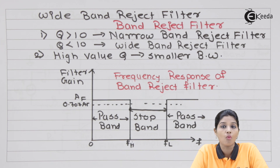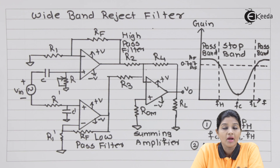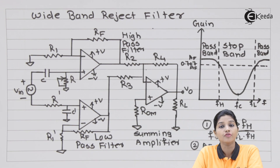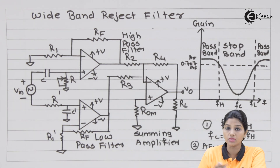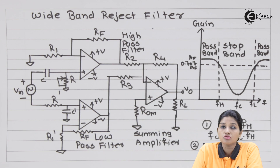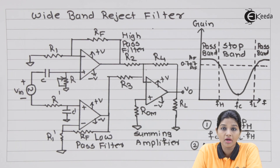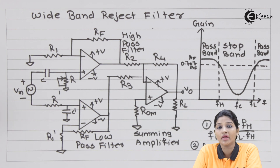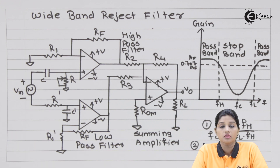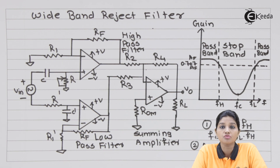The circuit of a wide band reject filter consists of a high pass filter, a low pass filter, and a summing amplifier. The frequency response of the wide band reject filter consists of two frequencies FH and FL, along with the center frequency FC. This is the practical response of the wide band reject filter. In case of a wide band reject filter, the stop band is wider compared to the narrow band reject filter. The value of FL should be greater than FH. The frequency response is basically a combination of the frequency responses of the low pass filter and the high pass filter.